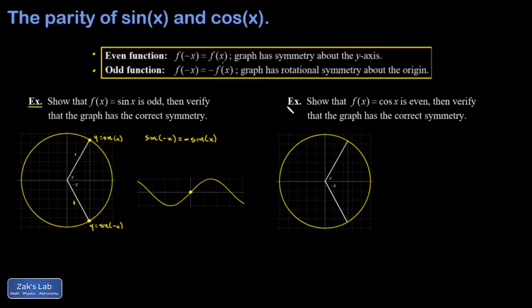In the next example, we do a similar thing with the cosine function. Show that cosine is even. So again, I've labeled an angle of x and an angle of negative x on the unit circle.